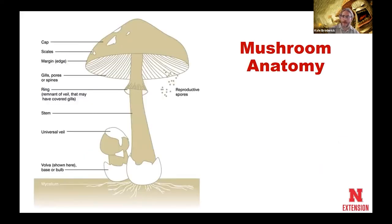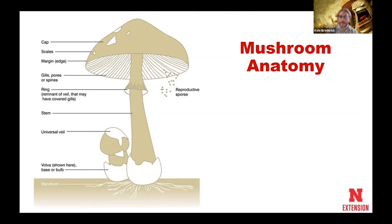We always have to talk a little bit about anatomy with our mushrooms. With our typical cap mushroom, they have a nice long stem — another name for that stem is a stipe. On that stipe somewhere there may be a ring, also referred to as an annulus. Sometimes that annulus is not present or it may be very obscured.